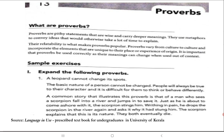People will always be true to their character and it is difficult for them to think or behave differently. The common story that illustrates this proverb is that of a man who sees a scorpion fall into a river and jumps in to save it. Just as he is about to come ashore, the scorpion stings him — because it is the basic nature of the scorpion, even though he has done a good thing for it.